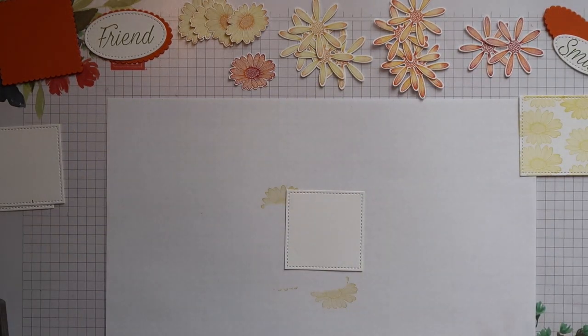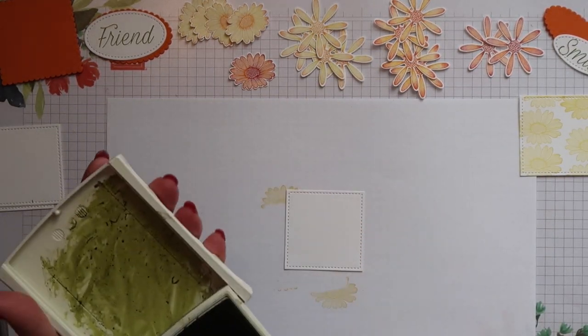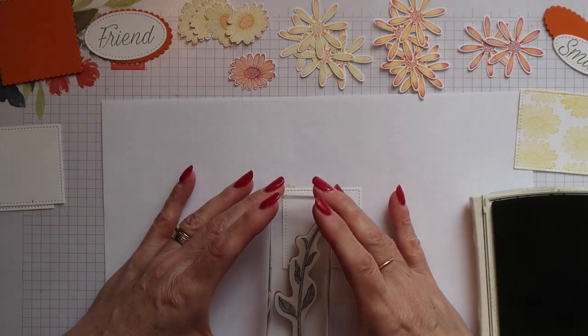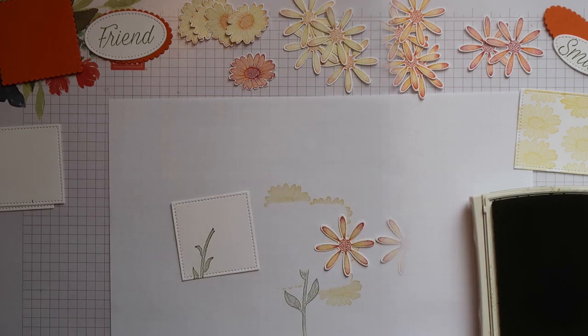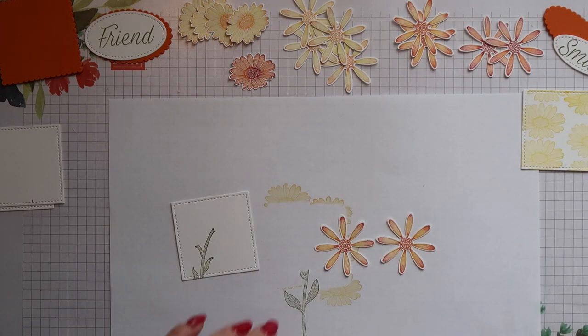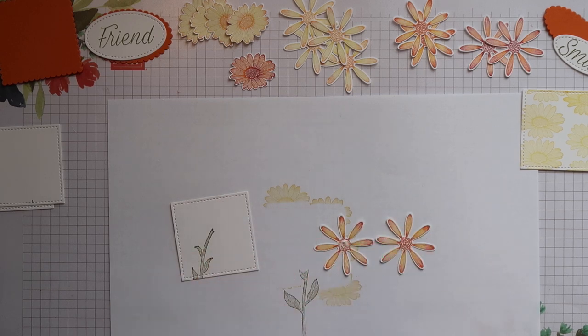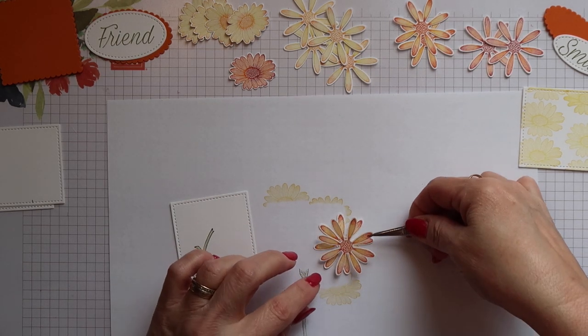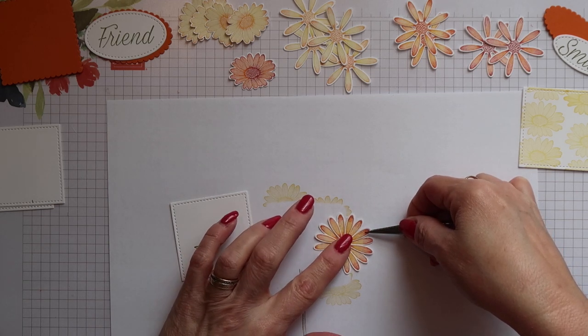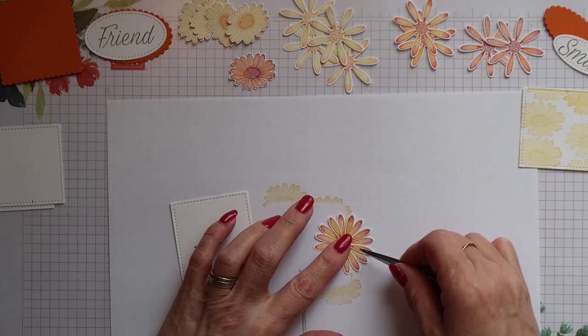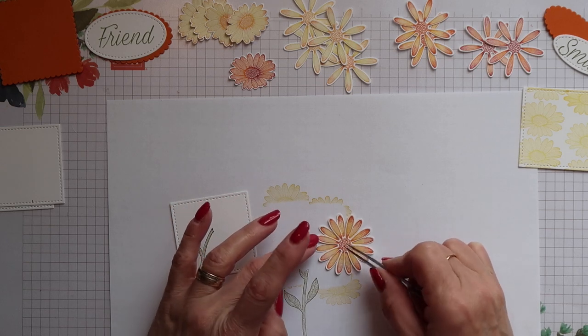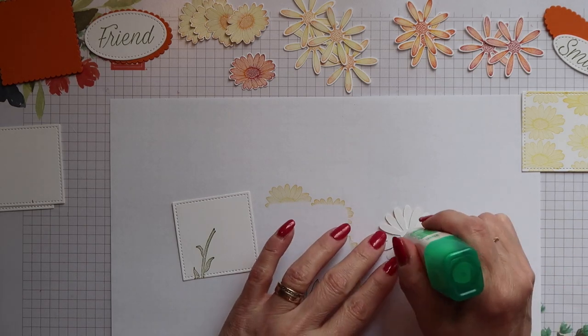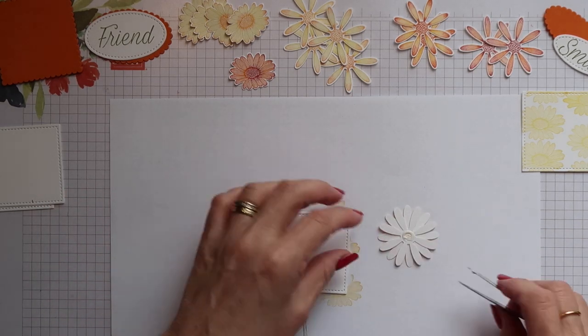For this second panel all I need to stamp is the stem in Old Olive ink. I'm going to add the daisy using two of the ones I stamped in Mango Melody and Terracotta Tile. I'm going to add glue to the centre of one of them and then layer the other one on top just offsetting the petals. I can then add more glue to the reverse and position it onto my panel.